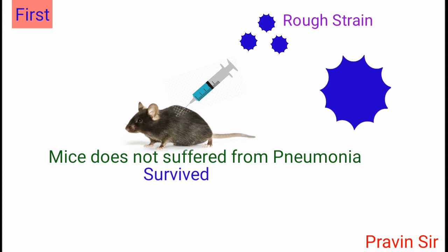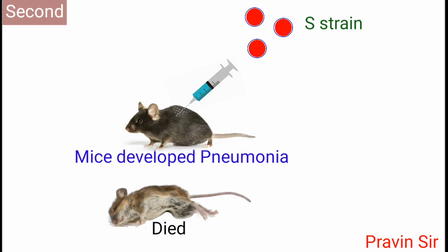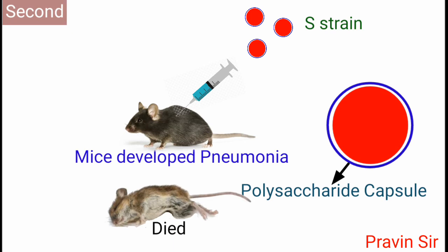Second, Griffith injected S strain bacterium into mice. The mice developed pneumonia and died. The reason was that since S strain had a polysaccharide capsule, it did not get destroyed by the mice's immune system.